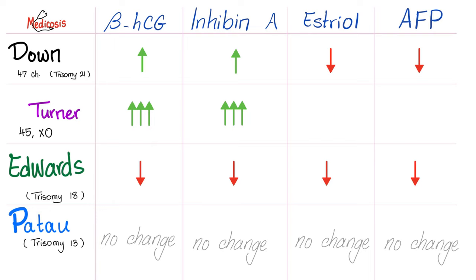Now imagine a pregnant woman asks if her baby has Down syndrome, Turner syndrome, Edwards syndrome, or Patau syndrome. Before ordering an expensive genetic test, there is a simpler, cheaper test called the quad screen. It includes four things: beta-HCG, inhibin A, estriol, and alpha-fetoprotein. In Down syndrome, the first two (beta-HCG and inhibin A) are high and the second two are low. In Turner syndrome, the first two are very high. In Edwards syndrome, everything is low. In Patau syndrome, everything is normal.